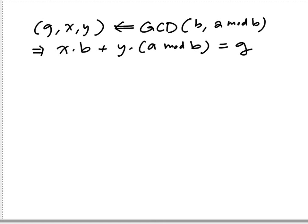All right, so this is what we know from the recursive call. We know that we get g, x, and y such that x times b plus y times a mod b equals gcd, right?